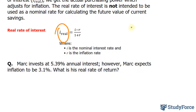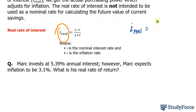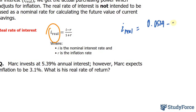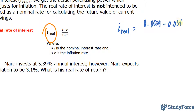Using the formula, we write I_sub_real equal to: I represents the interest earned on your investment, which in this case is 5.39%, or 0.0539 as a decimal. R represents the rate of inflation — 3.1% is the same as 0.031. The denominator is 1 plus 0.031.